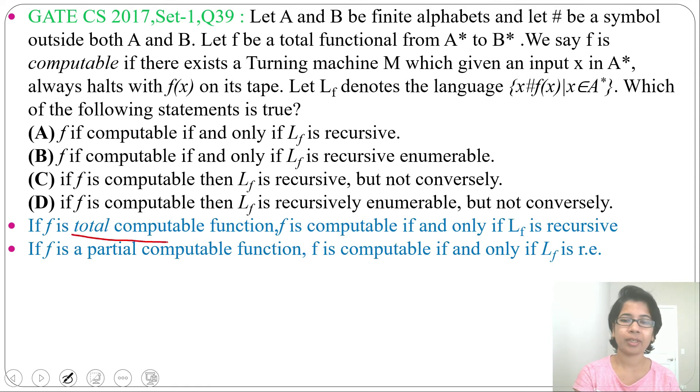What is total computable? Total computable means for all functions, it will work. Like suppose you are considering x+1, whatever x value you will consider, that Turing machine will work. But in case of partial computable, for x2 it will work, maybe for x3 it will not work.